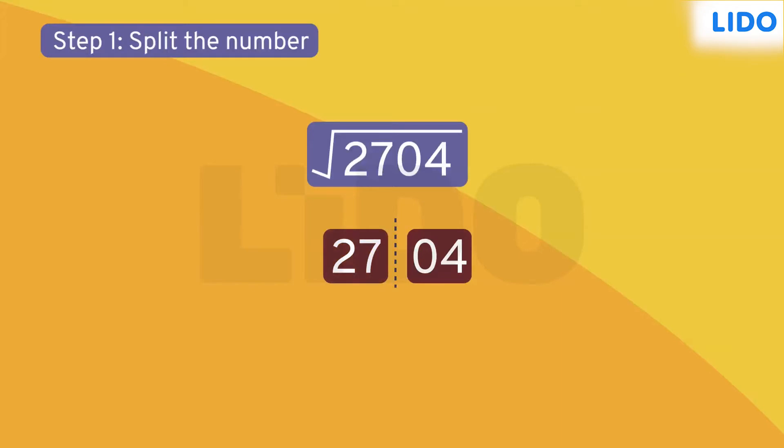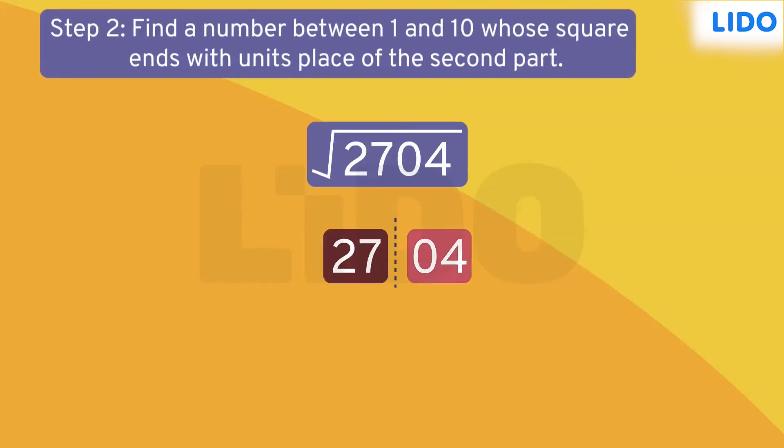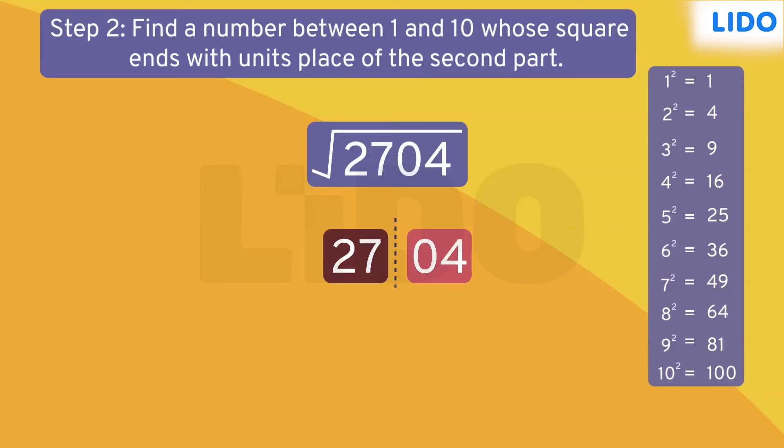Now let's focus on the last two digits. The next step is to find a number between 1 and 10 whose square ends with the units place of the second part. The units place of the second part is 4.